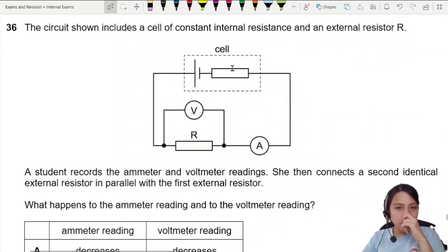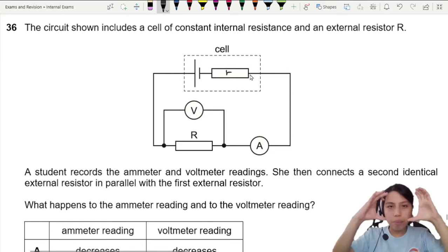The circuit shown includes a cell of constant internal resistance. The internal resistor is the one inside the box that represents the battery, and there's an external resistor R.